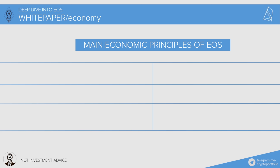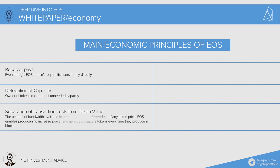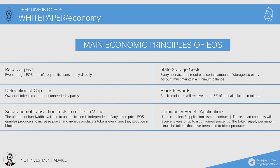There are six important economic facts about EOS. First, receiver pays — even though EOS doesn't require users to pay directly. Second, delegation of capacity — token owners can rent out unneeded capacity. Third, separation of transaction costs from token value — bandwidth available to an application is independent of token price. Fourth, EOS enables producers to increase power and awards them tokens every time they produce a block. Fifth, state storage costs — every user account requires a certain amount of storage and must maintain a minimum balance. Sixth, block rewards — block producers receive about 5% of annual inflation in tokens, which is how they are compensated since users don't pay transaction fees. Additionally, users can elect community benefit applications — smart contracts that receive tokens of up to a configured percent of token supply per annum minus tokens paid to block producers.